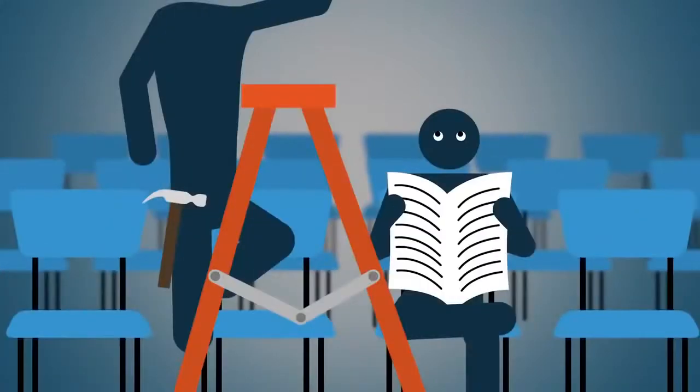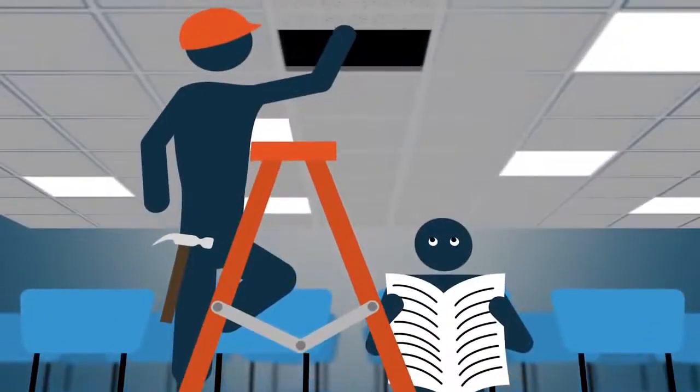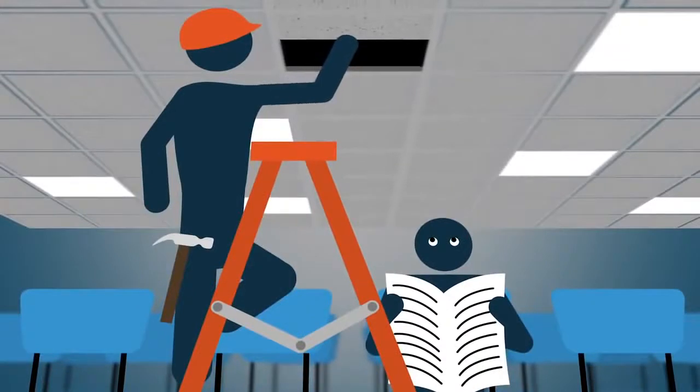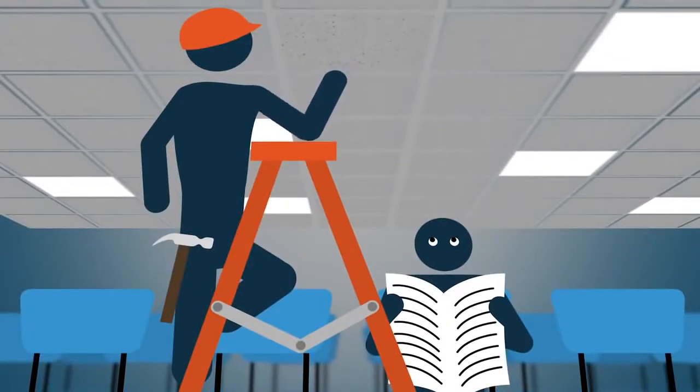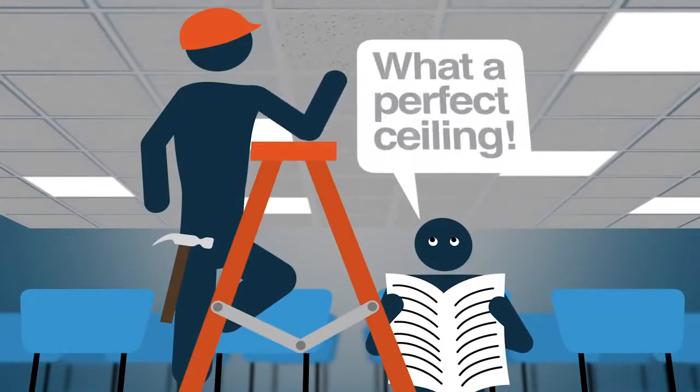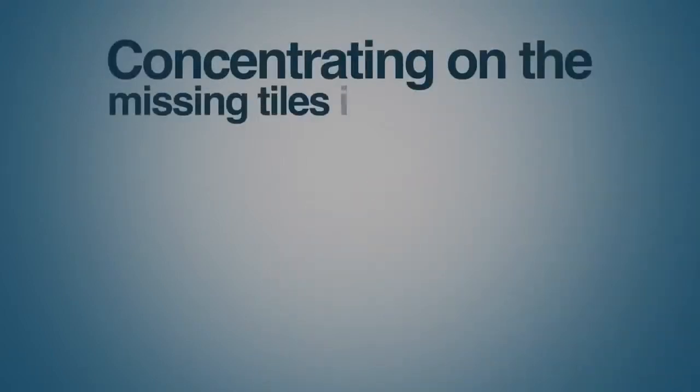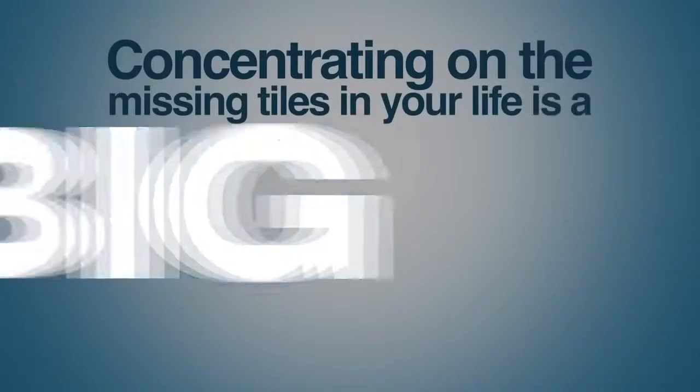Now, that's fine for ceilings. In fact, it's actually good, because we can replace a ceiling's missing tile and once again have a perfect ceiling. Ceilings, after all, can be perfect. But this doesn't apply to life. Most of what is missing in our lives, or what we think is missing, cannot be replaced. Unlike a ceiling, life can never be made perfect. For that reason, concentrating on the missing tiles in your life is a big problem.